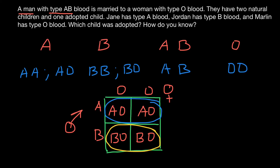Now let's return to our question. Jane has blood type A, so this is their child. Jordan has blood type B — this is also a possible blood type in their children. And Marlin has type O, which is not possible in this couple. So Marlin is the adopted child, because blood type O is not possible in the progeny of this couple.